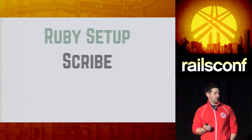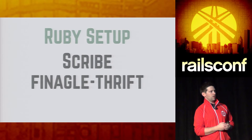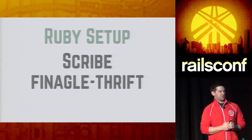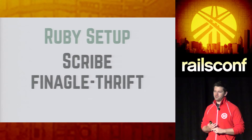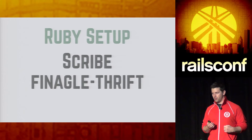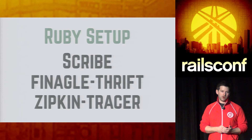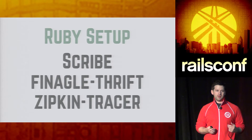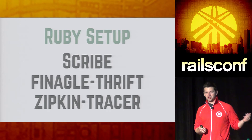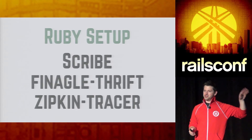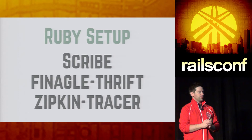The Ruby setup is actually pretty easy. We use the Scribe gem, which allows us to talk with the Scribe log system. The Finagle Thrift gem — part of Twitter's Finagle Thrift GitHub repo — introduces all of the trace IDs, span IDs, all the communications, and all the recording for you. And finally, Zipkin Tracer is a Rack middleware component that is part of the Zipkin project that automates the inbound portion of request tracing on a Rails service. As long as you're handling all Rail services, it's incredibly easy — there's no extra configuration beyond getting these things installed and adding the middleware.